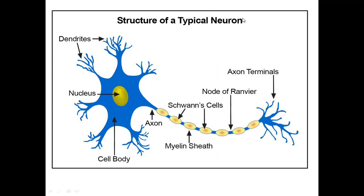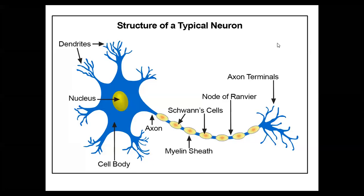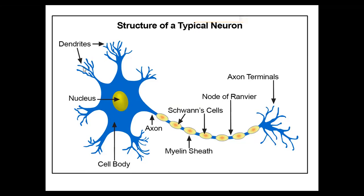Next is the structure of a typical neuron. Here is the structure of a typical neuron. The first part is the short branched processes coming out from the centrally rounded part, which is known as the dendrite. The main function of the dendrite is to receive the stimulus from all directions. These dendrites join together to form a short branch process which is known as the dendron.